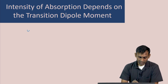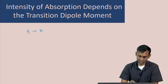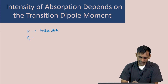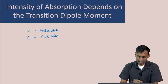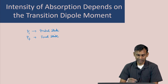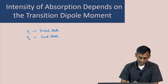Assume that the molecule is in a state ψ_i — let us say this is the initial state of the molecule — and ψ_f is the final state of the molecule. The transition dipole moment is defined in terms of these initial and final states, and one more quantity which is the dipole moment operator.